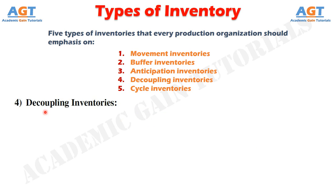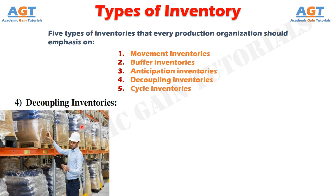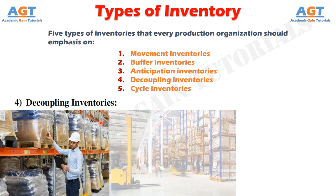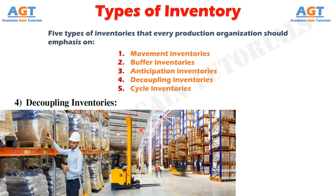Number 4: Decoupling Inventories. This type of inventory deals with the work rate of different machines and people, because normally machines work at different rates — some slower and some faster. For example, a machine might be producing half the output of the machine on which the item being handled is to be processed next. Inventories held between the various machines are kept in order to disengage the processing on those machines.